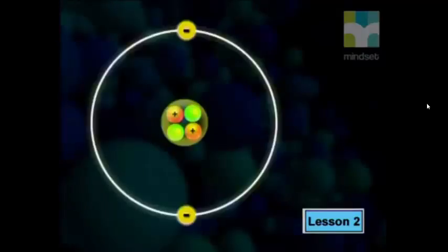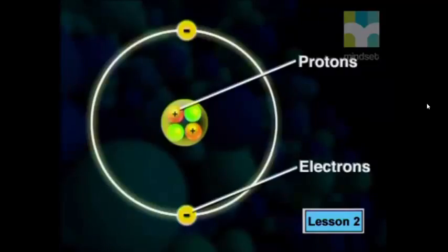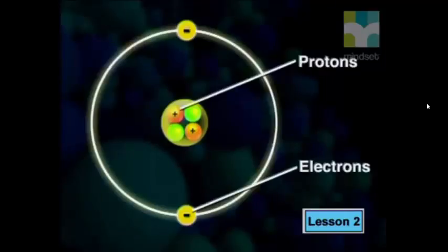Let's begin this lesson by having a look at the model of an atom. Within the nucleus of the atom are positively charged protons. Negatively charged electrons move around the nucleus in different orbitals. Remember, an electron and a proton have the same size of charge. An electron has a charge of minus 1, while a proton has a charge of plus 1. For every positive proton, there is a corresponding negative electron, so each atom has no overall charge — it is neutral.